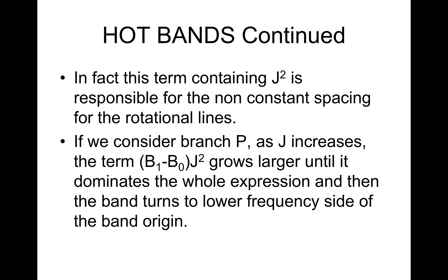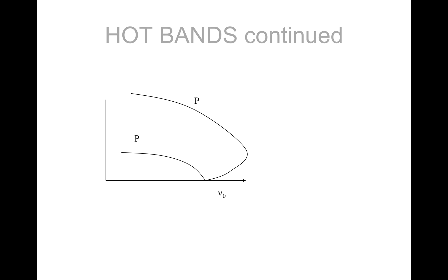If we consider branch P, as J increases, the term B1 minus B0 into J squared grows larger until it dominates the whole expression. And then the band turns to lower frequency side of the band origin, as shown here, which is the lower end of the frequency band from the origin.